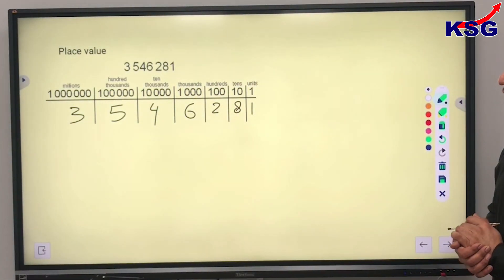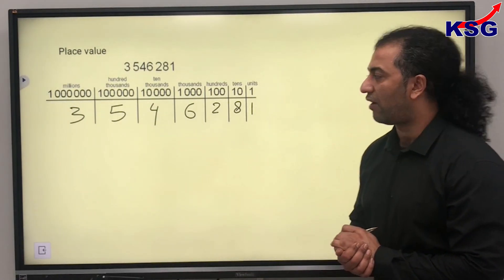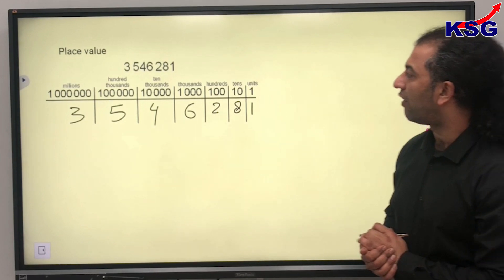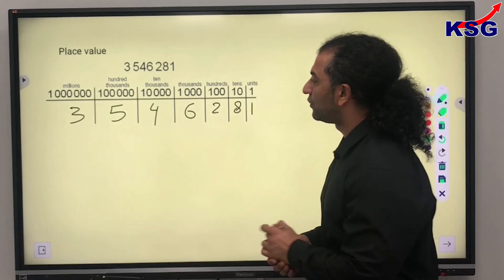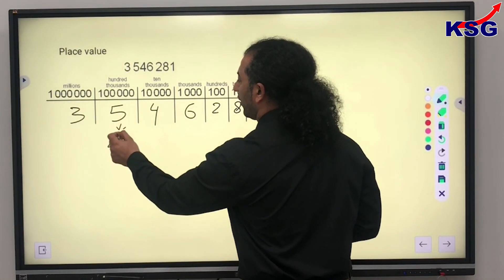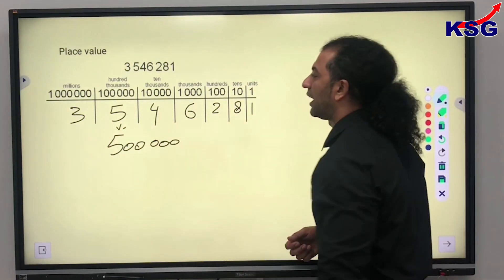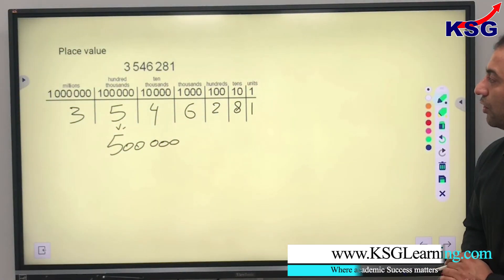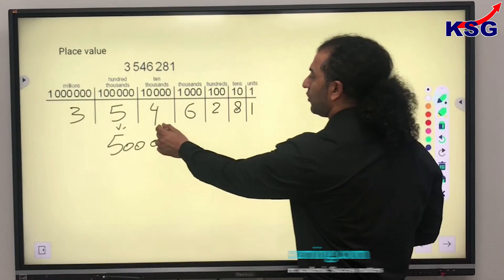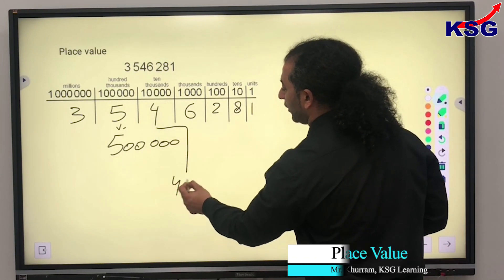Now if somebody asks us what is the value of the 5 in this number — the value of 5 is 500,000. And what is the value of 4? The value of 4 is 40,000.